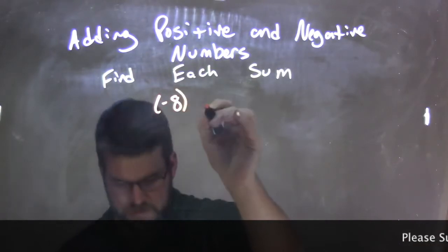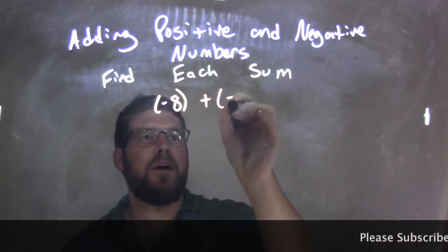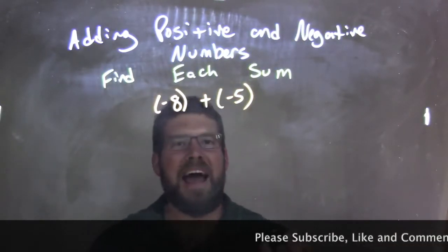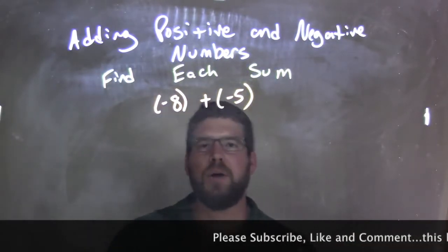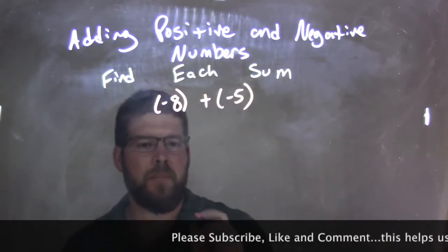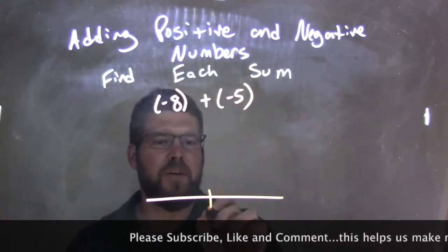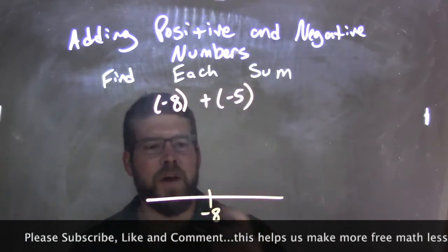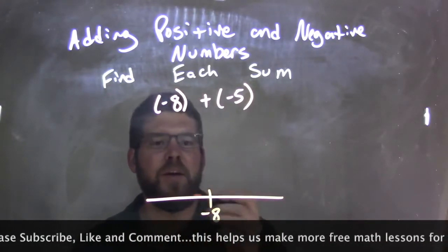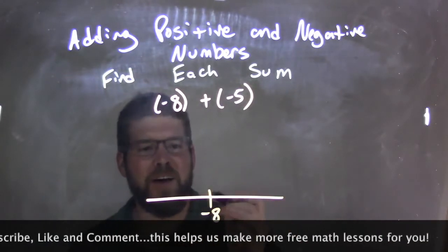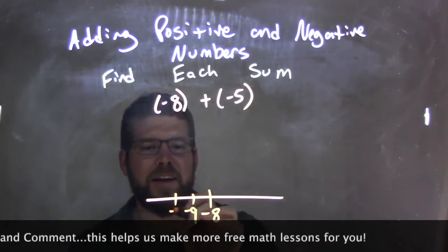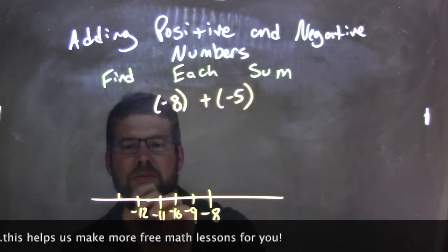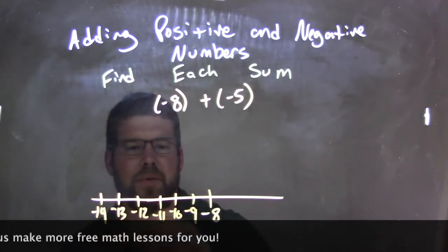Negative 8 plus negative 5. I want to add those together, so here is where I want to use the number line. I start with negative 8 and I need to move to the left — negative 5 units. So we have negative 9, negative 10, negative 11, negative 12, negative 13, negative 14.